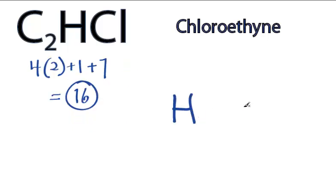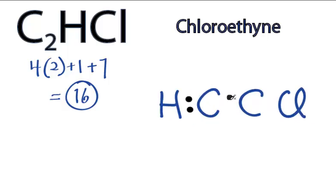Hydrogen always goes on the outside of a Lewis structure. Carbon then is the least electronegative. We'll put both carbons on the inside, and then we'll put the Cl on the end. We'll put two valence electrons between atoms to form chemical bonds.